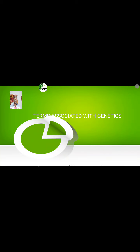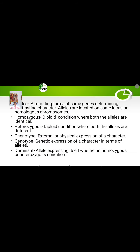Welcome. Today we will study the various terms associated with genetics. These terms you will come across throughout genetics. The first one is alleles. Alleles are the alternating forms of the same gene which determine contrasting characters.